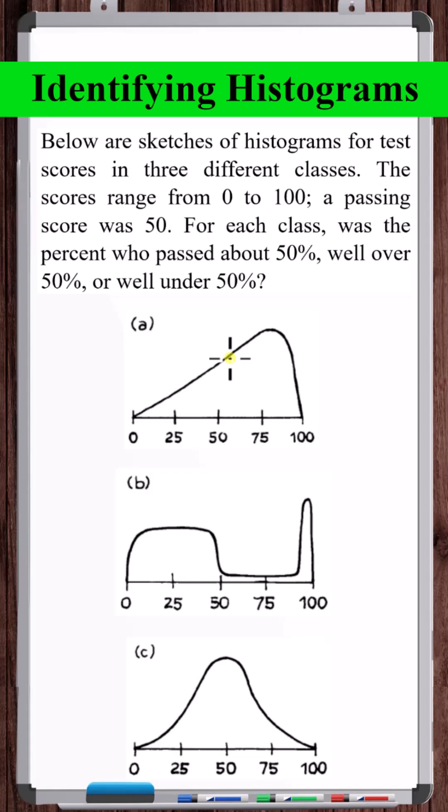Here, we can see that there's more area above a score of 50 than below. So for this class, the percent who passed was above 50%.